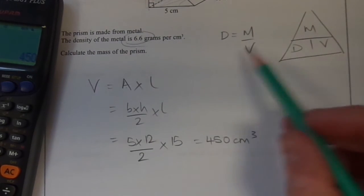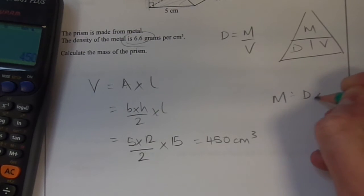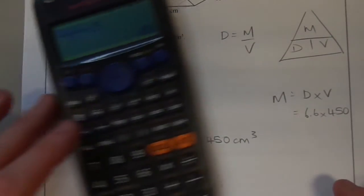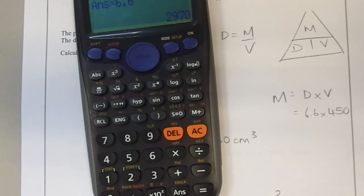Now going back to the density formula, the mass we said was density multiplied by the volume, which is 6.6 multiplied by 450. 2, 9, 7, 0.